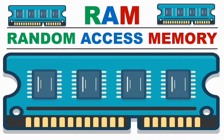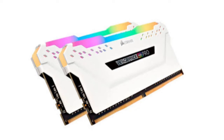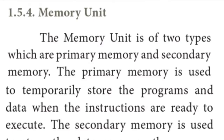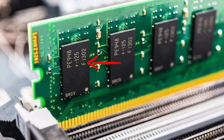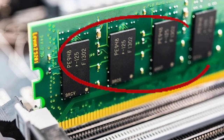Random Access Memory is known as Main Memory. Random Access Memory is available in computers in the form of Integrated Circuits. When the RAM is available in the form of Integrated Circuits, it is placed in that form inside the computer.